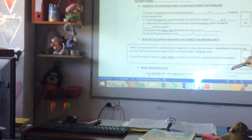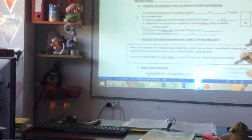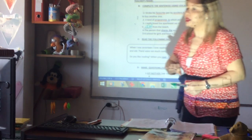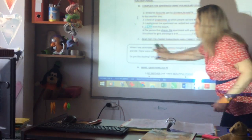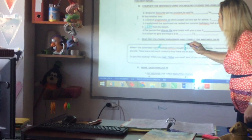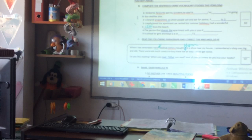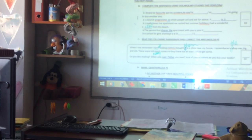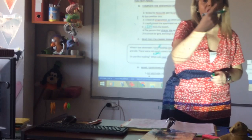Complete with specific vocabulary: 'I really love my apartment, we rented last summer holiday,' 'I found a beautiful...,' 'I had a wonderful view' — for example. Words will come from units 1 to 6. Exercise B: read the following paragraph and correct the mistake. 'When I was 17, I loved reading comics. I bought them in a shop near my house. I remember the shop — it was big, and there were not many comics' — not 'much' because we use 'many' for countable nouns. You'll correct a text with all grammar from units 1 to 6.